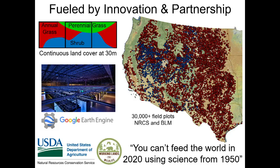To this end, the NRCS, BLM, and other agencies have launched national data collection efforts — national rangeland monitoring programs — particularly over the last 15 years, in which they have gone out and collected scores of data on the ground: boots on the ground, vegetation transects. Our question was: what can we do with these datasets that have been collected and the services that Tyler just described?